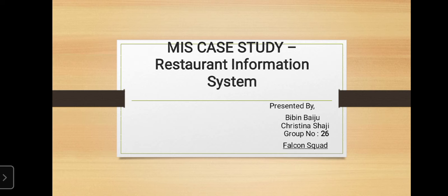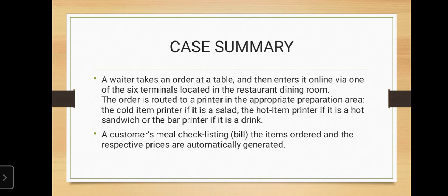A waiter takes an order at a table and then enters it online by one of the six terminals located in the restaurant dining room. The order is routed to a printer in the appropriate preparation area: the cold item printer if it is a salad, the hot item printer if it is a hot sandwich, or the bar printer if it is a drink.